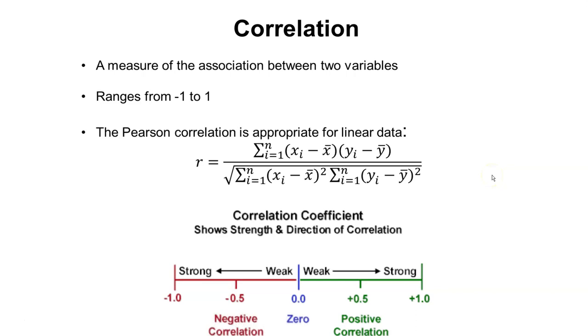The Pearson correlation, what we'll call little r, is appropriate for linear data. The Pearson correlation coefficient can be calculated by knowing all of the means and observations for each of the x and y variables. We take xi minus x bar times yi minus y bar and do that for all of the values in our data set.